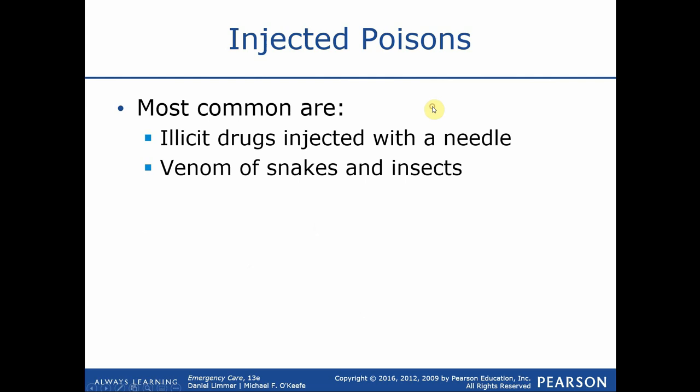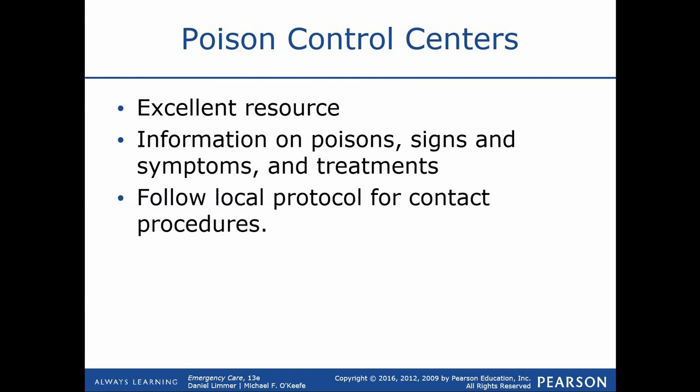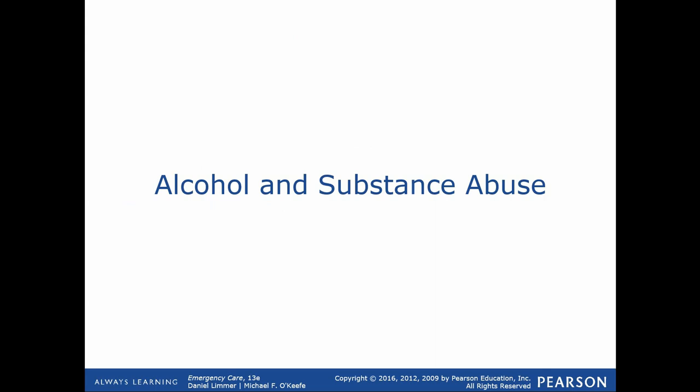Injected poisons range widely — from snake or bee venom all the way to illicit drugs such as heroin. Our assessment is going to be the same, and treatment is going to focus on treating the underlying signs or symptoms.